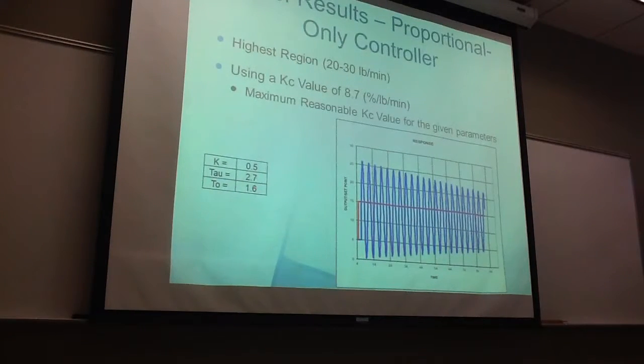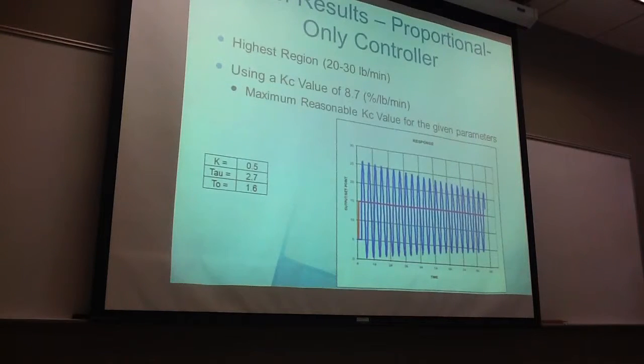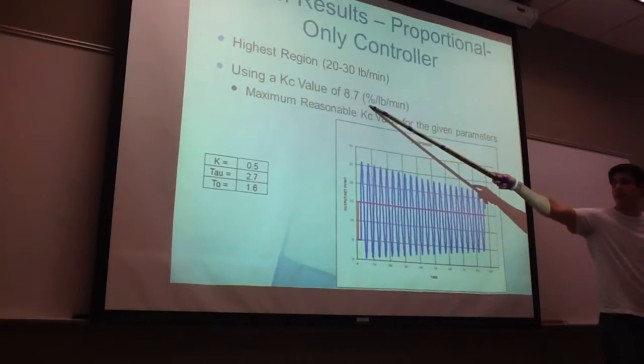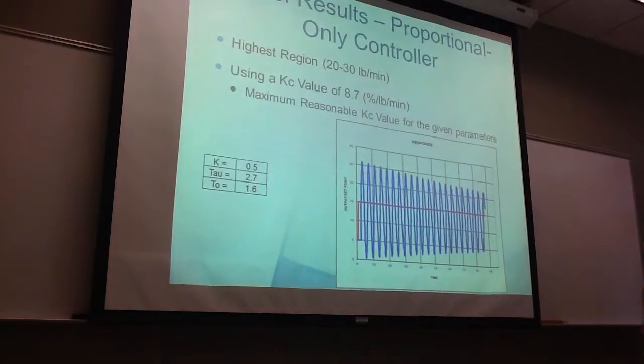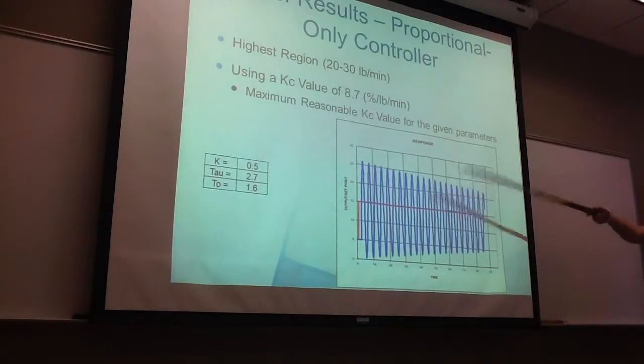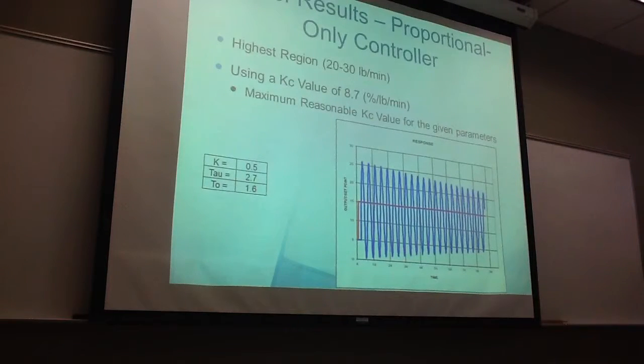Now, we'll move on to the highest region, because we didn't get results for the middle region as of yet. For our maximal reasonable Kc value, we found that to be 8.7% per pound per minute, using a gain of 0.5, a tau of 2.7, and a dead time of 1.6.